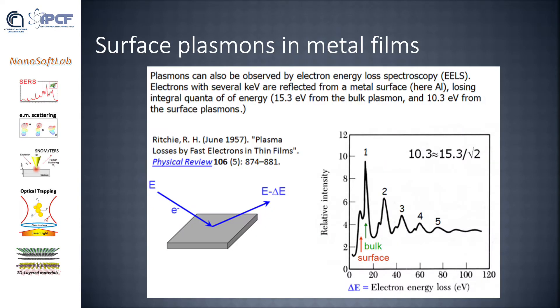The birth of plasmonics can be dated to 1957 when Rufus Ritchie discovered that when exciting metallic films with electrons, together with the bulk plasmons, it was possible to excite at lower energy some other plasmonic modes. These modes were attributed to surface plasmons, that is, resonant states of the light with the surface.